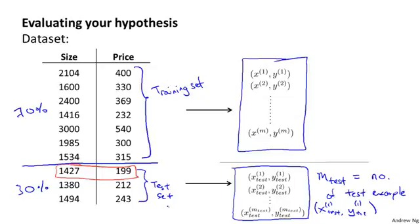One last detail: whereas I've drawn this as though the first 70% goes to the training set and the last 30% to the test set, if there is any sorted ordering to the data, it'll actually be better to send a random 70% of your data to the training set and a random 30% to the test set. So if your data were already randomly sorted, you could just take the first 70% and last 30%. But if your data were not randomly ordered, it'd be better to randomly shuffle or randomly reorder the examples before splitting.